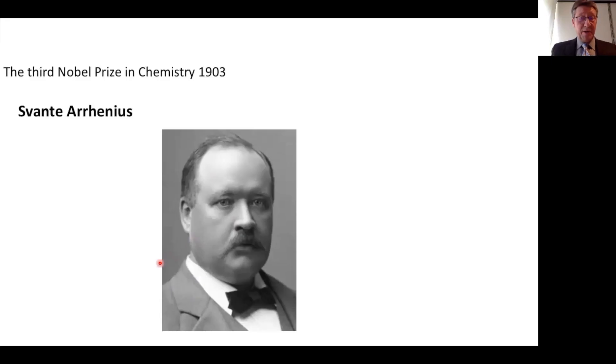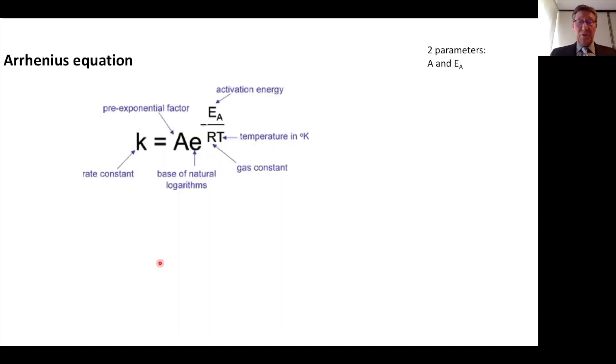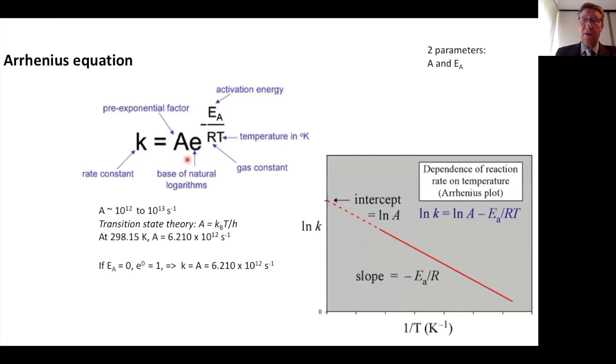It is the third Nobel Prize winner in chemistry, Arrhenius. This is the Arrhenius equation and it describes the rate as a function of temperature. The activation energy is here and it also contains the pre-exponential factor. The pre-exponential factor is the maximum rate that the reaction can attain. If the activation energy is zero, then this becomes one and you have the maximum rate. This rate is roughly 10 to the power of 12, 10 to the power of 13 per second.